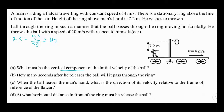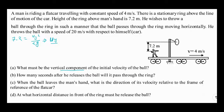In the second part, we find how many seconds after release the ball will pass through the ring. Since we already know uy, we can calculate the time to reach maximum height using t = uy / g. Once uy is known, the time is easily obtained.